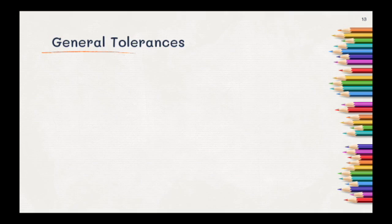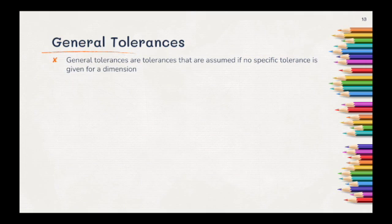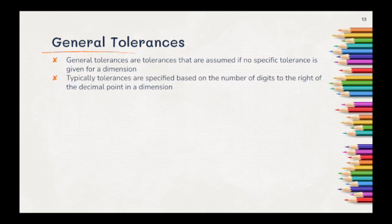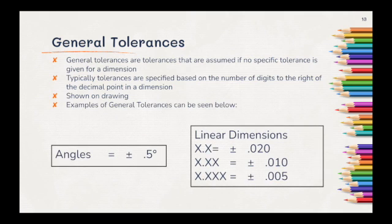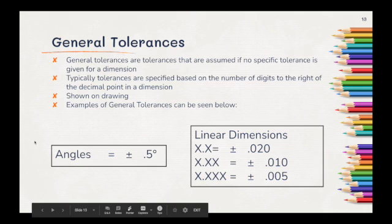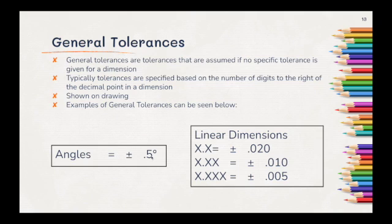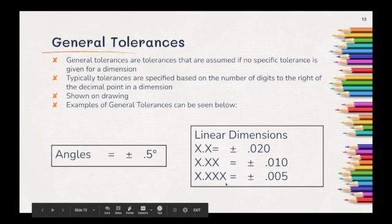Let's take a look at general tolerances. A general tolerance is a tolerance that is assumed if no specific tolerance is given for a dimension. Typically, tolerances are specified based on the number of digits to the right of the decimal point in a dimension. These are shown in a drawing in separate boxes and are indicated through annotation. Below you can see two examples of general tolerances. If this box were to be included in a drawing, it would mean that all angles inside of that product have a tolerance of plus or minus 0.5 degrees. Linear dimensions work a little bit differently. We're basing it on the number of decimals placed to the right of the decimal point. So if we have three values, that means it has plus or minus 0.005.